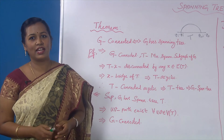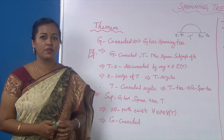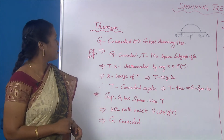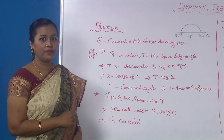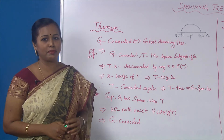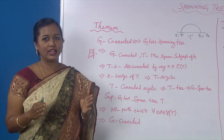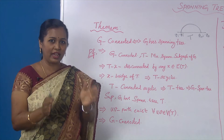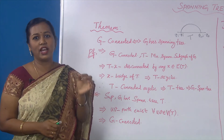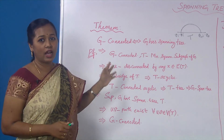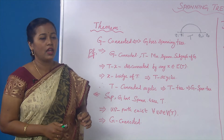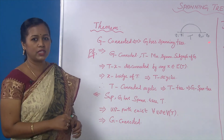Now let us see some theorems that relate the connectedness property of a graph with that of a spanning tree. The theorem states that G is a connected graph if and only if G has a spanning tree. A necessary and sufficient condition for a graph to be connected is that it should contain a spanning tree. Let us now see the proof of this theorem.